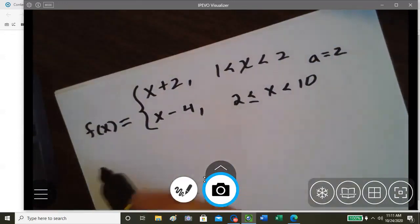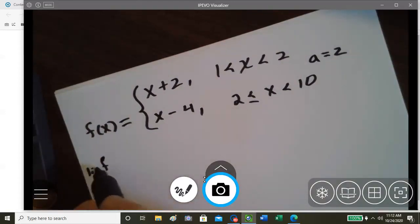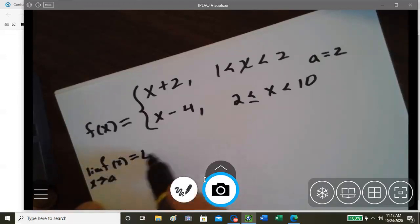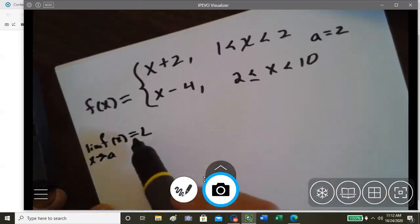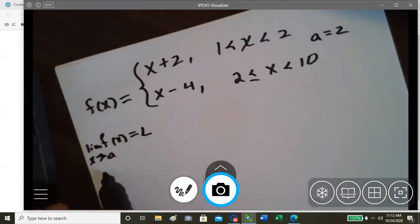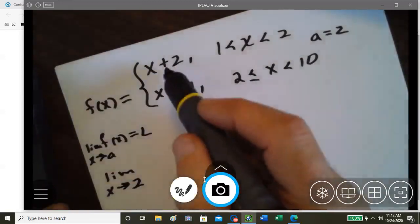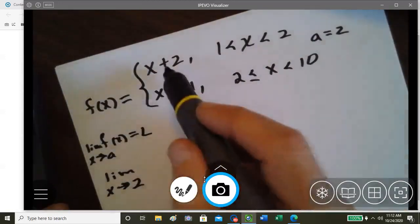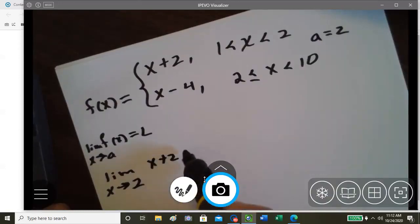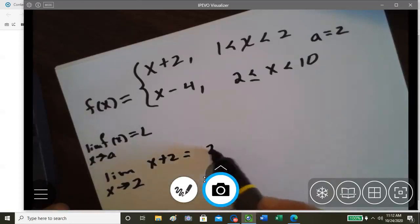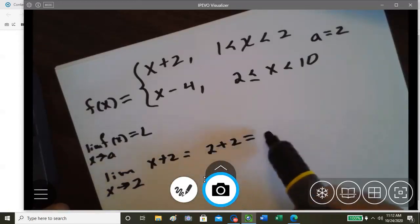So again we're looking at the limit as x approaches a for our function. Does it achieve a limit? This would be the limit as x approaches a, which is 2. First we're going to put x plus 2 in there for f of x, and so we get 2 plus 2 equals 4.